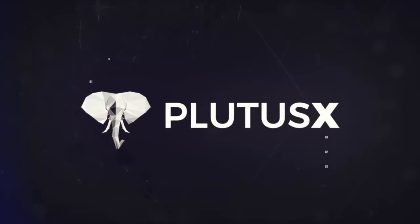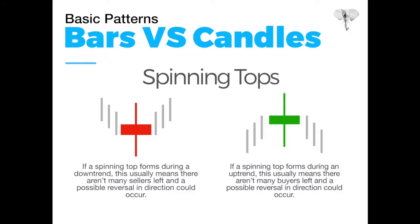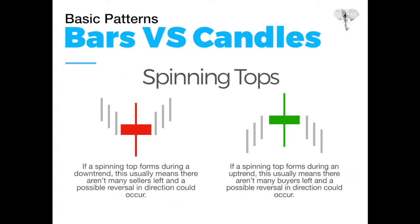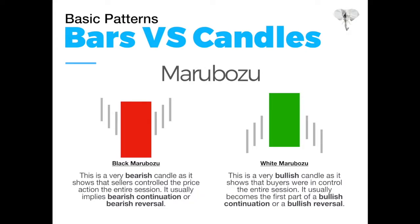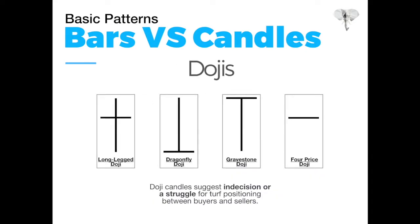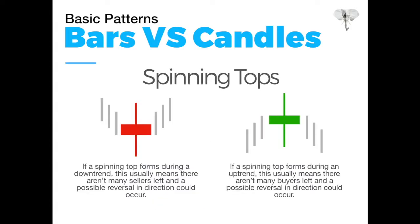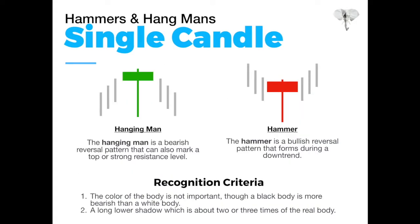Technically these could be considered from the previous video one-candlestick patterns, but these are just more basic things to learn and know about before moving into the markets. Dojis and marbuzos, for example, are the most significant basic candlestick patterns. However, these ones are a little bit different — they tell a different story and have different recognition criteria.